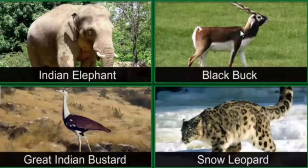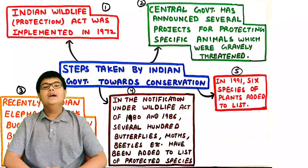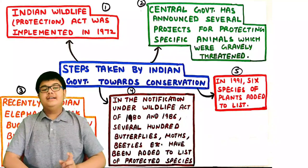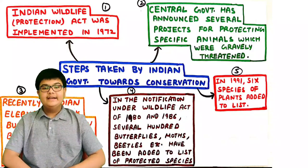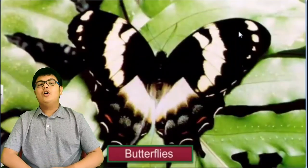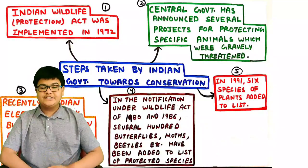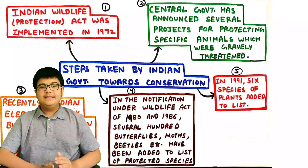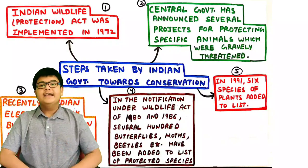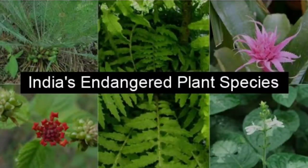Third, the great Indian elephant, blackbuck, great Indian bustard, snow leopard etc. have also been given legal protection. Fourth, under the Wildlife Act notifications of 1980 and 1986, several hundred butterflies, moths, beetles, dragonflies etc. have been added to the list of protected species — so now even insects are being given legal protection. Fifth, in 1991, six species of plants were also added to this list.